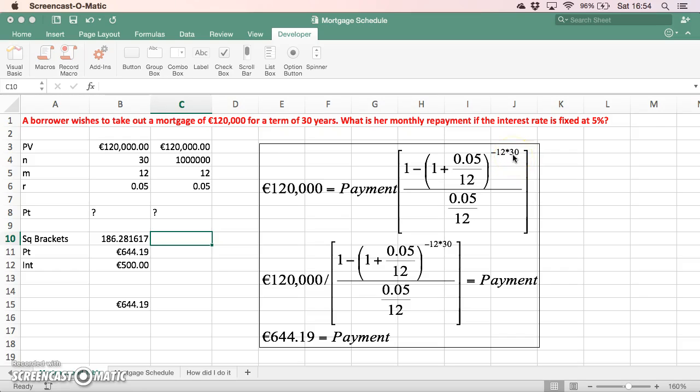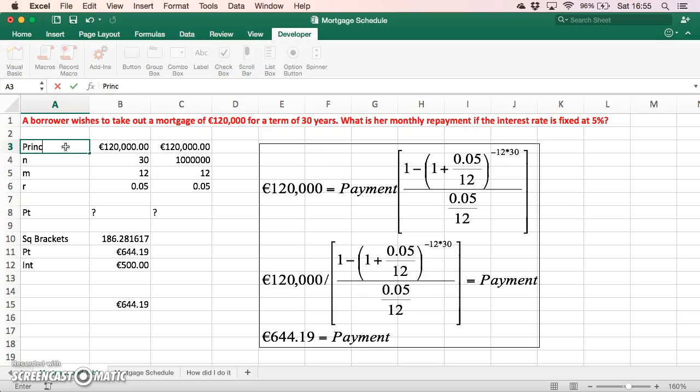The product of 12 and 30 is 360, so there will be 360 repayments on this 30-year mortgage. To estimate the payment value, we take the rate, bring over the square brackets, and it's being divided into 120,000. The payment comes to the other side and we get €644.19. I've put in the basic parameters: the PV is the principal amount borrowed, n is the number of years, m is monthly (12 months in the year), and the interest rate is expressed as a decimal, so 5% is 0.05.